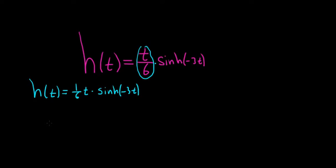Okay, let's go ahead and take the derivative using the product rule. So h prime of t. The product rule says you take the derivative of the first piece, which in this case is 1/6, because the derivative of t is 1, times the second piece.